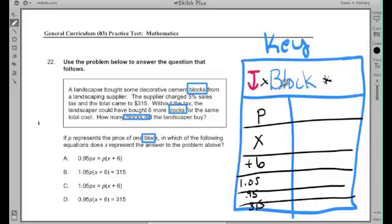What is p? P represents the price of one block. So look, I have the wording of my key: this is the price of a block.